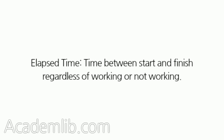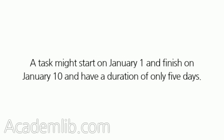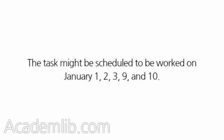Elapsed Time: the time between start and finish regardless of working or not working. The elapsed time of a task shows the start and finish dates regardless of whether the task is being worked on. A task might start on January 1 and finish on January 10 and have a duration of only 5 days. The task might be scheduled to be worked on January 1, 2, 3, 9, and 10.